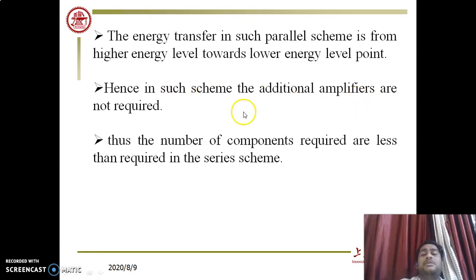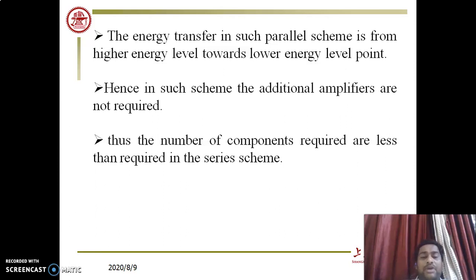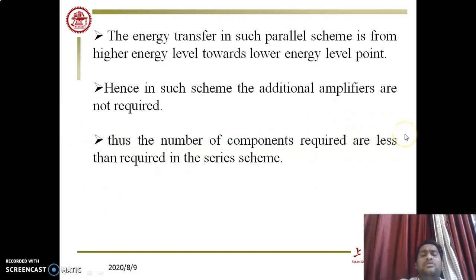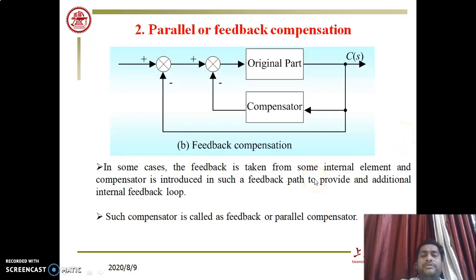Since energy flows from higher to lower level in feedback compensation, no additional amplifier is required — unlike in series compensation. The number of components required is less than in the series scheme. Feedback compensation is always connected inside the internal feedback loop and takes input from the system being controlled.